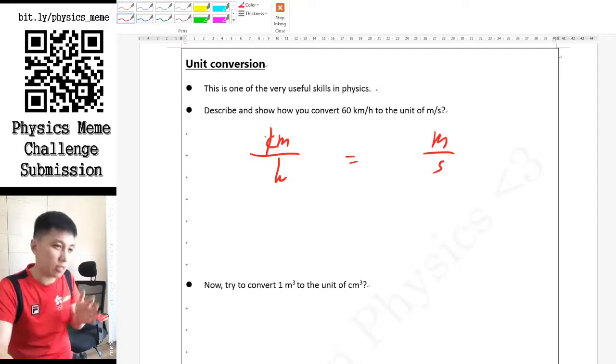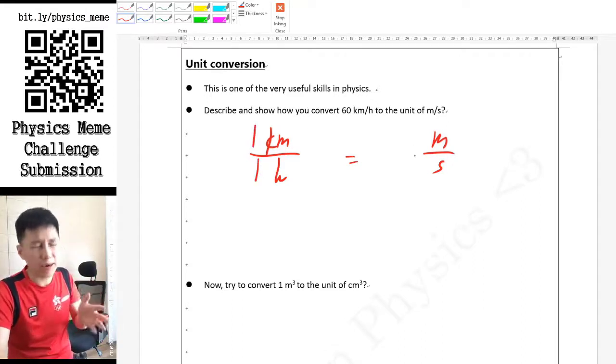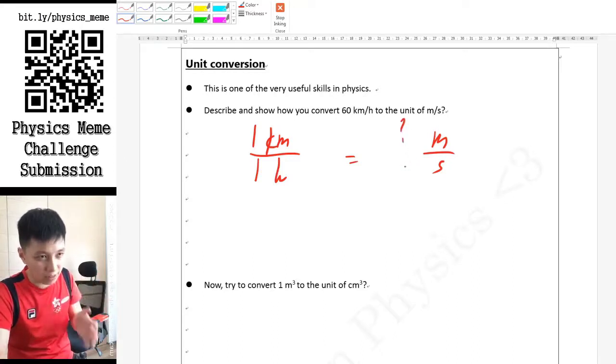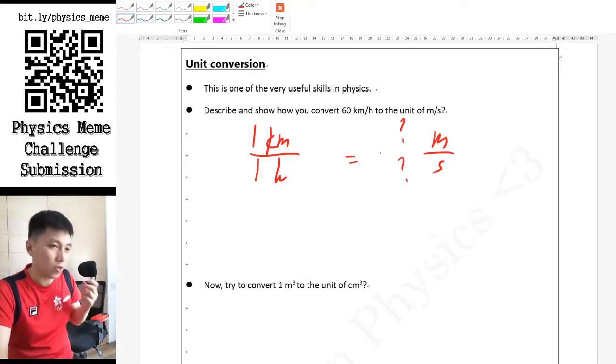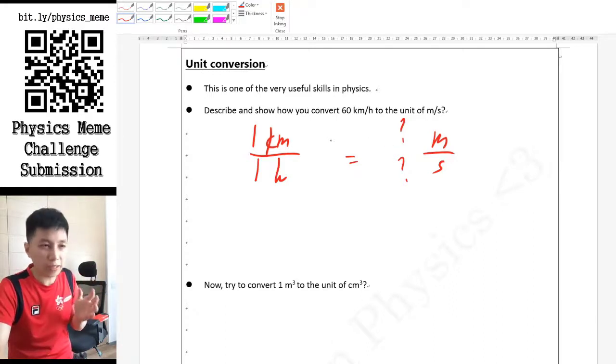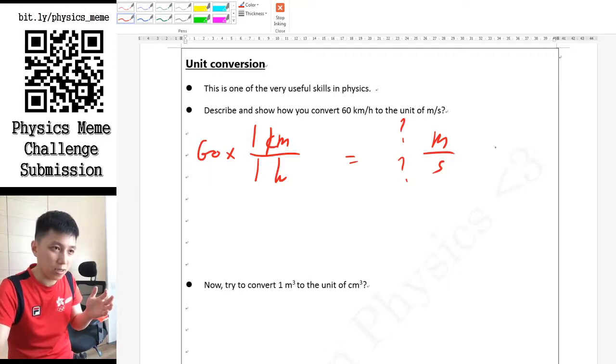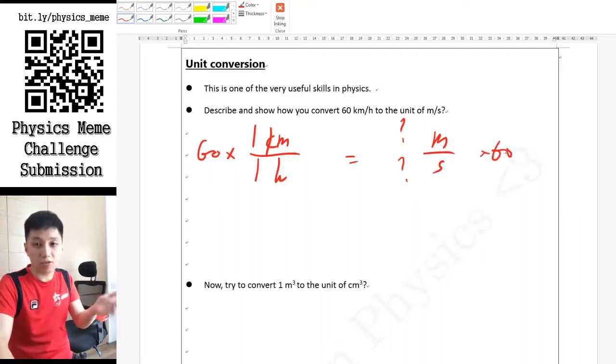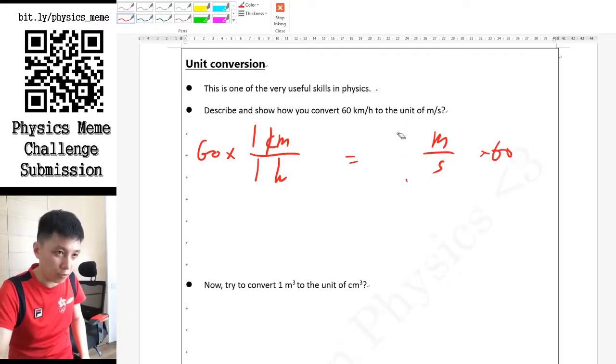The first thing that you must know is how much 1 km per hour can be converted to - how many meters per how many seconds. After you can find out this, what you can do is just multiply 60 on each side and then you can work out the answer.